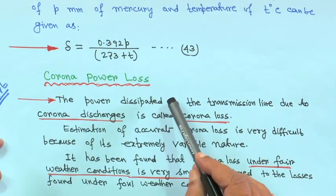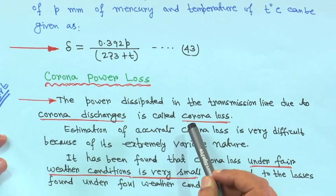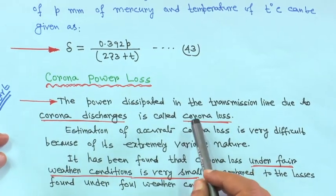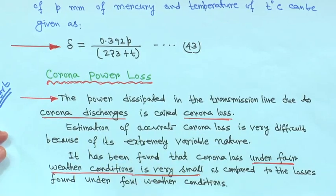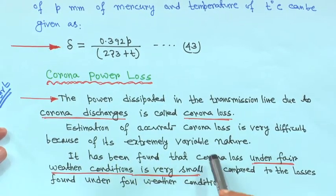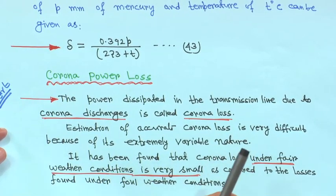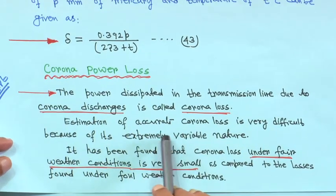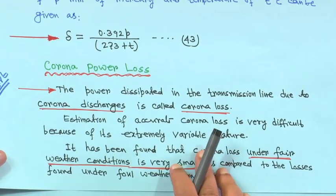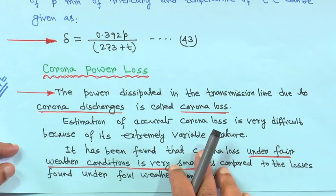Whatever the visual critical voltage and disruptive critical voltage we have seen, now we will come to corona power loss. Basically, the power dissipated in the transmission line due to corona discharge is called corona loss. Its accurate estimation is very difficult — almost impossible — because it is extremely variable in nature and depends on so many factors associated with it.